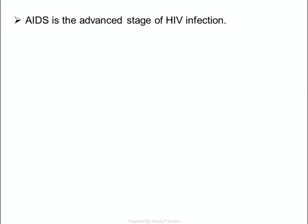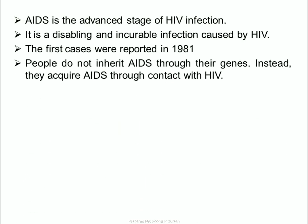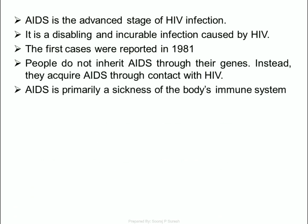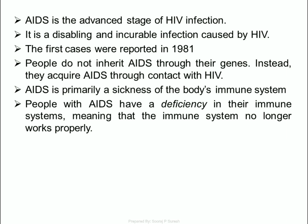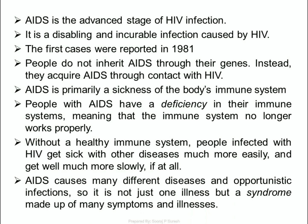AIDS is the advanced stage of HIV infection. It is a disabling and incurable infection caused by HIV. The first cases were reported in 1981. People do not inherit AIDS through their genes; instead, they acquire AIDS through contact with HIV. AIDS is primarily a sickness of the body's immune system. People with AIDS have a deficiency in their immune systems, meaning the immune system no longer works properly. Without a healthy immune system, people infected with HIV get sick with other diseases much more easily, and get well much more slowly, if at all. AIDS causes many different diseases and opportunistic infections, so it is not just one illness but a syndrome made up of many symptoms and illnesses.